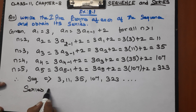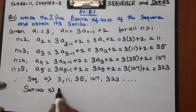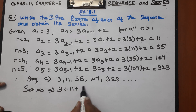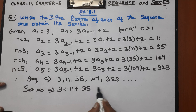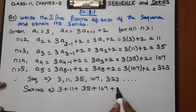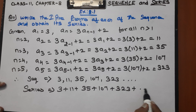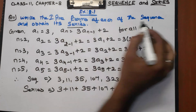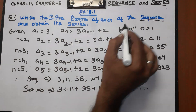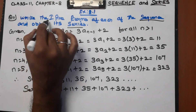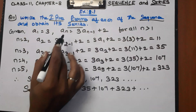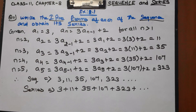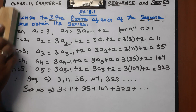The series is written as 3 plus 11 plus 35 plus 107 plus 323 plus ... and so on. When written as individual terms it is called the sequence; when the terms are added together it is called the series. This is the answer for Question Number 11.